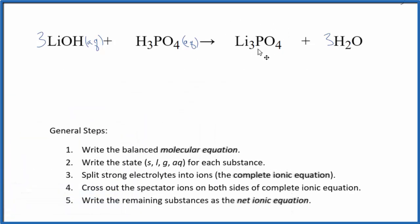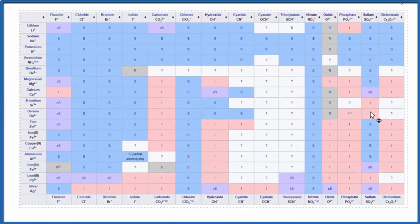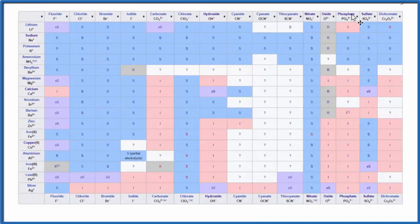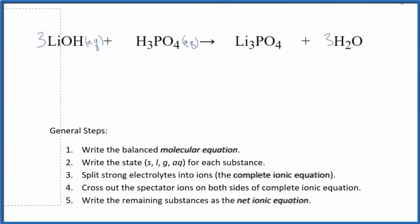For lithium phosphate, phosphates often are insoluble. So I'm just going to check that here on this solubility table. Here's lithium right here, and then phosphate right here. So that I, that means it's insoluble. It won't dissolve in water, and it's going to be a solid. So when we write the state, S for solid.